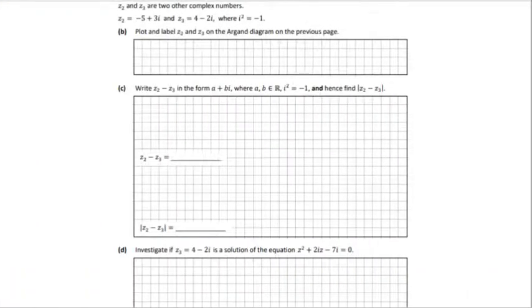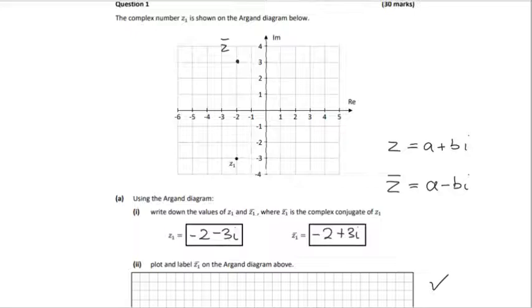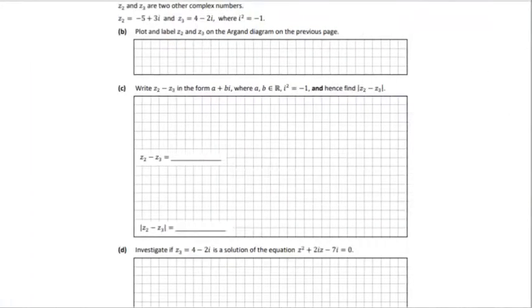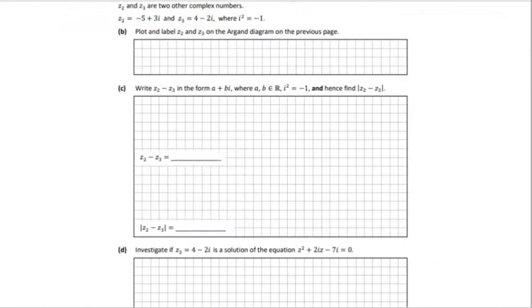We want to plot Z2 and Z3 on the Argand diagram. So Z2 is -5 + 3i, minus 5 in the real and plus 3. So that will be Z2, write Z2 next to the coordinate. And Z3 is 4 - 2i. Out 4 and down minus 2. Alright so very straightforward so far.